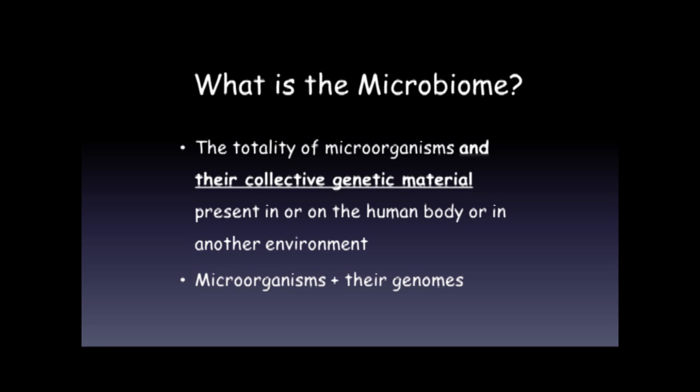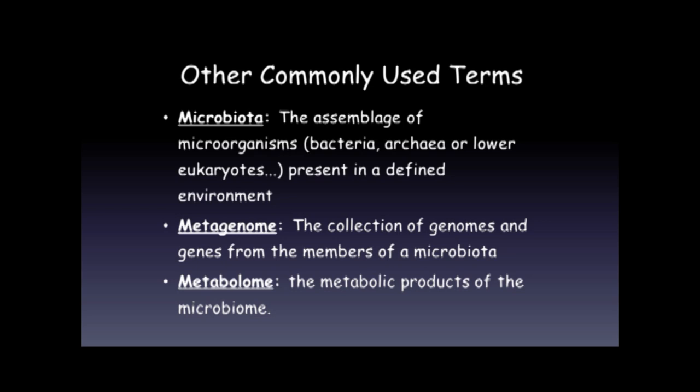There are many other terms out there, which includes microbiota. What's the difference between microbiome and microbiota? Microbiota, strictly speaking, refers just to the microorganisms — all of the microorganisms, bacteria, archaea, etc. — present in a given environment, whereas the microbiome is the microorganisms plus their genetic material. The metagenome is the collection of genomes or genes from members of the microbiota, and metabolome is the metabolic products of the microbiome. There's a whole new vocabulary that can be very confusing, and even experts often use some of these words interchangeably.